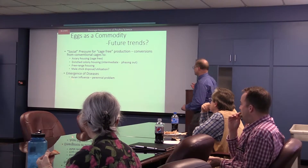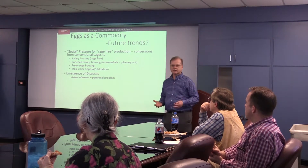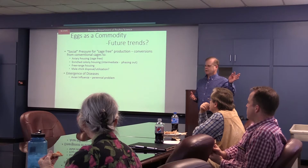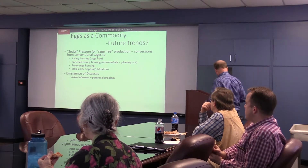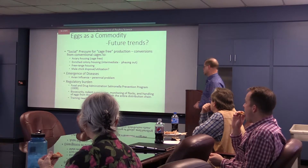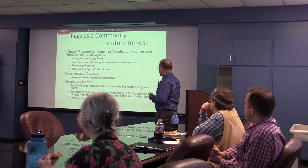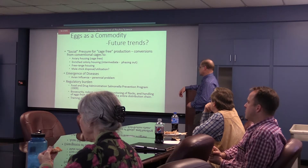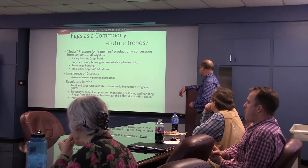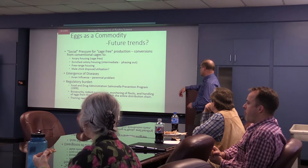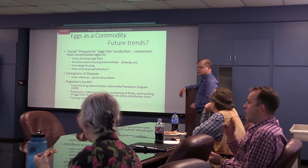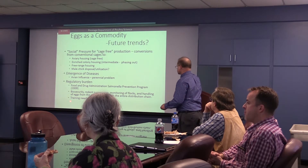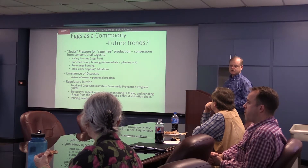Emergence of diseases — I threw up avian influenza; it's a perennial problem. Every year we've got to deal with it, but that's not the only one. There are diseases that are going to pop up that we don't know are coming down the pike. Regulatory burden — these are some examples: the FDA's M&L prevention program, which regulates biosecurity, your rodent program plan, monitoring of flocks, handling of eggs from the time of lay through the entire distribution chain. That's a regulatory burden that's not going to change. All of this means that training needs to continue — people have to be trained.